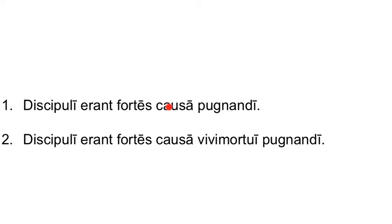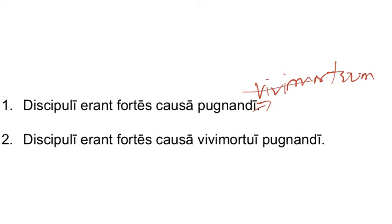Next: Discipuli erant fortes causa pugnandi. You remember that causa usually takes a gerund in the genitive case — for the sake of something. The students were brave for the sake of fighting. So this is a genitive gerund going with causa. Next sentence: Discipuli erant fortes causa vivi mortui pugnandi. Now we have more information — they were brave for the sake of fighting the zombie. Vivi mortuum should be accusative as a direct object of pugnandi, but with the flip-flop, we take the case we need — genitive, because causa goes with a genitive — turn the zombie into that case, and give it a gerundive to modify it in the same case, number, and gender. So: for the sake of the zombie that must be fought, or for the sake of fighting the zombie. The students were brave for the sake of fighting the zombie.